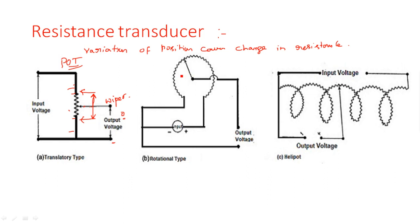Similarly, in the rotational type, the entire input voltage is applied between two points, and output voltage is taken from the wiper with a common ground for both input and output. Here the wiper rotates rather than moving linearly. In the third type, the helipot, the resistance potentiometer is wound in a helical shape and the wiper rotates in a helical motion. This is how displacement changes the resistance of the measuring instrument.